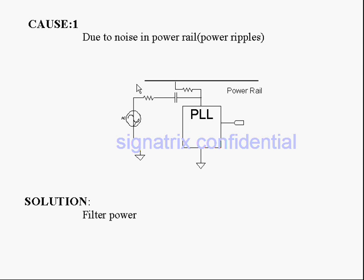So how can we avoid this kind of clock jitter? The solution is we have to filter the power. Since we know that noise is in the power rail, it is better practice to filter that power so we can avoid high frequency noise and give clean, noiseless power to the PLL, so it will not produce any ripples.